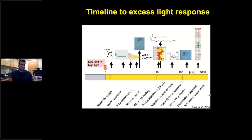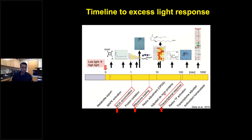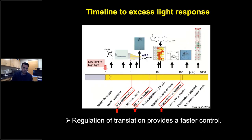A kinetic analysis of the complete stress response in plants exposed to high light after low-light acclimation reveals that transcriptional response takes more than an hour, whereas ribosome loading — a translational response — takes within 10 minutes, happening right after ROS accumulation, which occurs within one minute. So cytosolic translation seems to provide a faster, rapid response in the case of excess light stress.